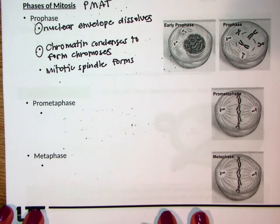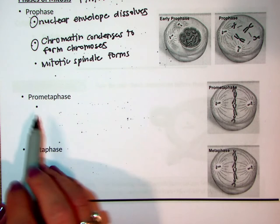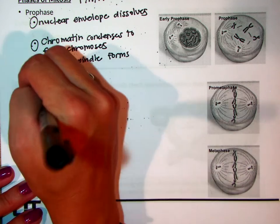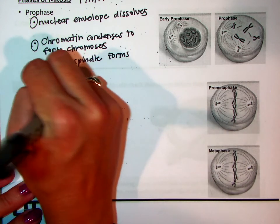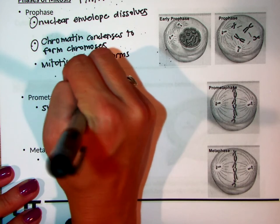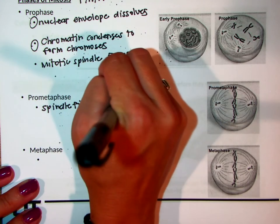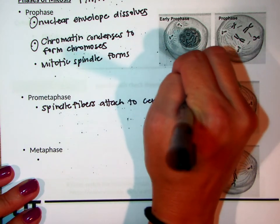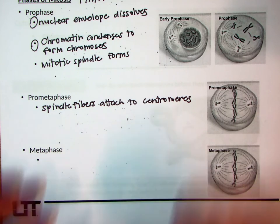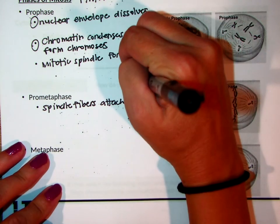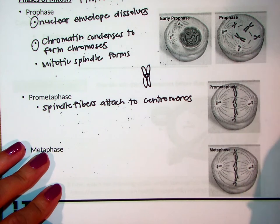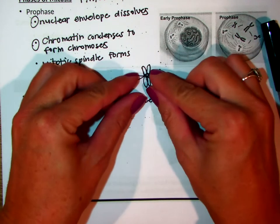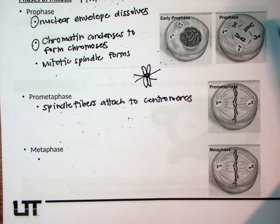Next we have pro-metaphase — 'pro' means before metaphase, so this is a little step in between. The spindle fibers attach to the centromeres. That little center part of the chromosome — the spindle fibers come and grab onto it, because eventually what they're going to do is pull this apart and split those two sister chromatids apart from each other.